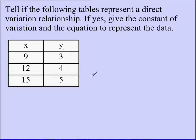Now, this set of values, I'm going to do the same thing. I'm going to see if I have a direct variation relationship. So again, I'm going to use y over x and find a k value. So y is 3, x is 9, that reduces down to 1 third.